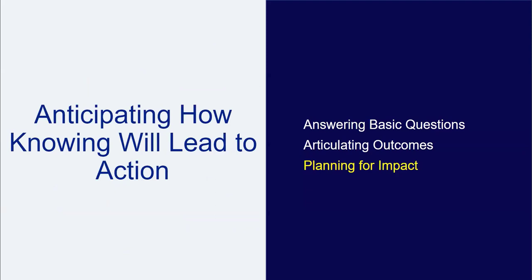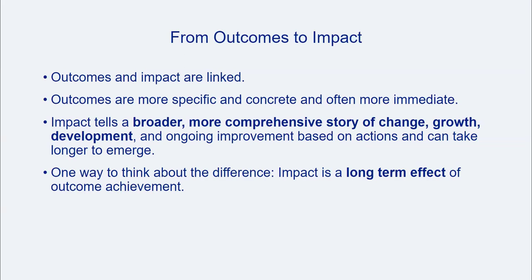A third way to work through anticipating how an outcome will ultimately lead to action and beneficial change is to plan from the outset for making an impact. This takes the process one step past outcomes to a more lasting change. While not always possible to do perfectly or predictably, keeping impact as a value helps one identify the needs, contexts, and goals of library assessment projects. This process begins with outcomes, but doesn't stop there. Outcomes in general are defined as more specific, concrete, and immediate than impact. Impact, as a term related to assessment, is broader and more comprehensive—it's more about long-term growth, change, development, and improvement, and usually takes longer to emerge. To simplify, impact is the long-term cumulative effect of outcome achievement. It's also important to convey that many outcomes can converge to create one larger impact—the process from outcome to impact is not necessarily one to one.